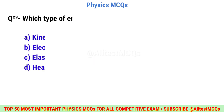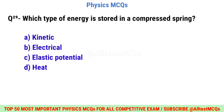Question number twenty-nine: Which type of energy is stored in a compressed spring? Right option is C: Elastic potential energy.